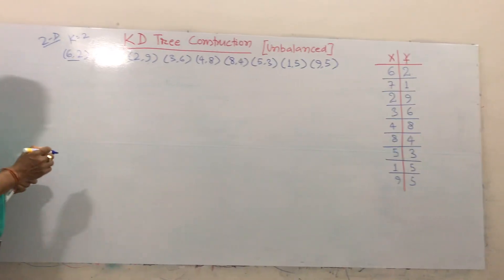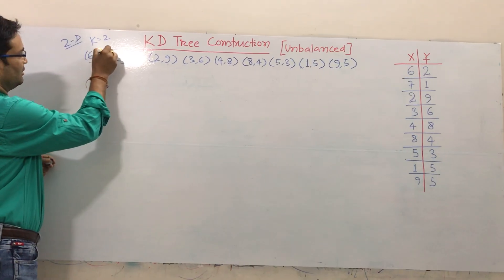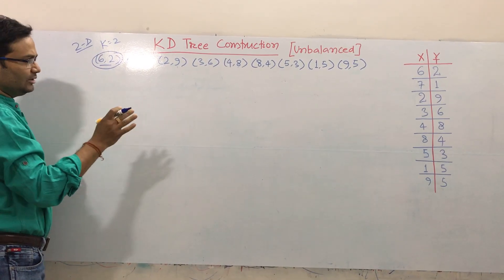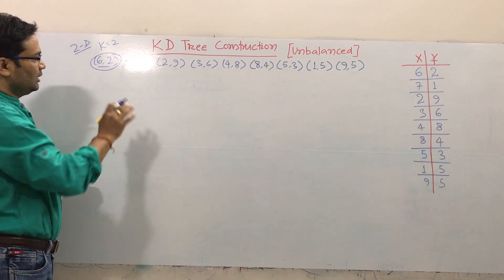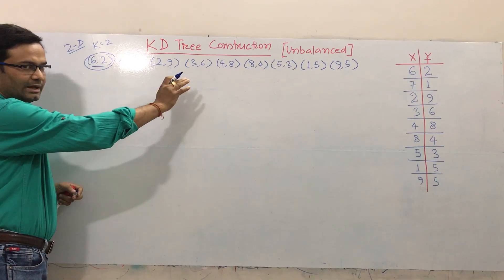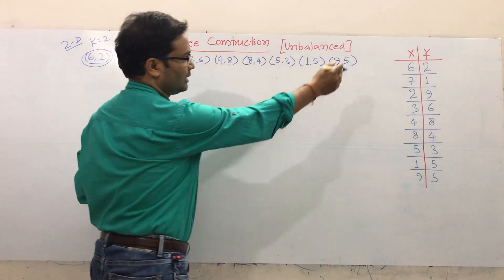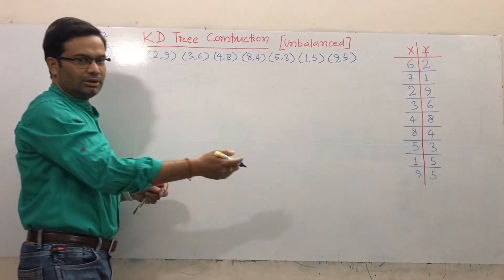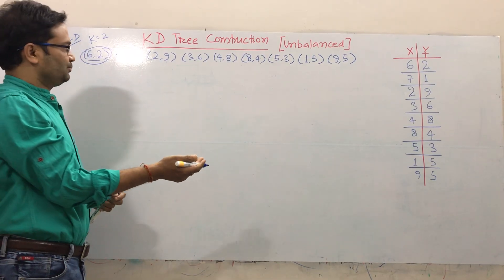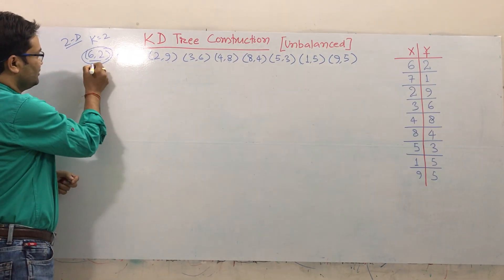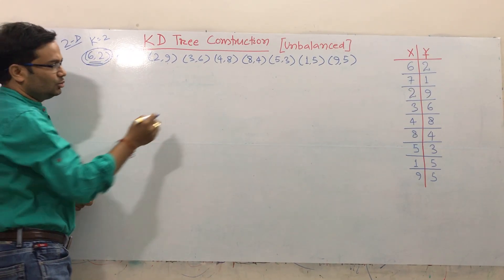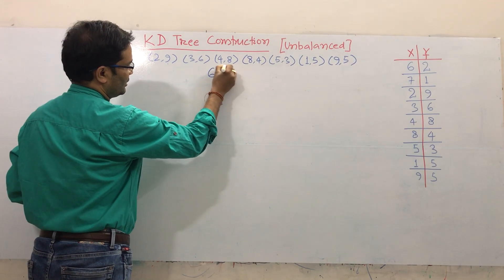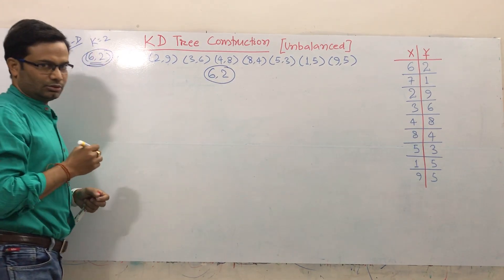So what you have to do — we start with the first number. The number could come as pairs or as x, y in table form. Either way, data could come. So take the first point, it is 6, 2. Make the root. This is the root.